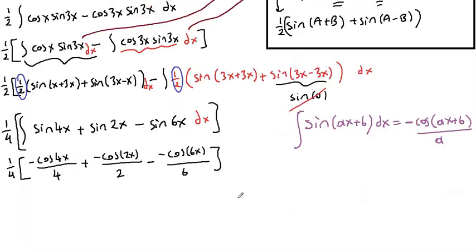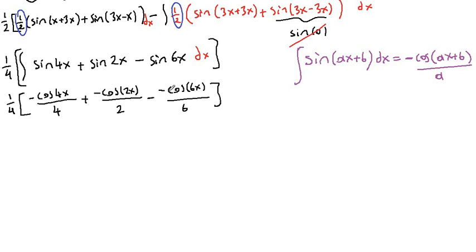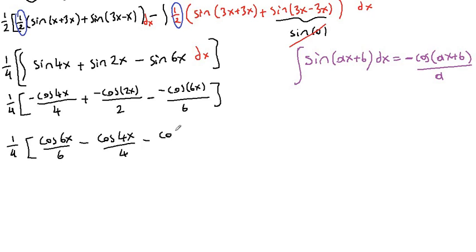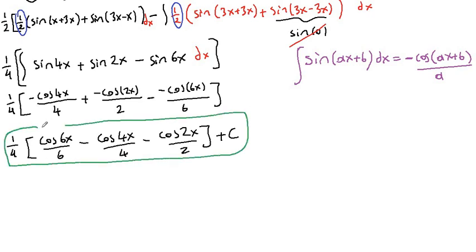Now we can simplify. Negative times negative is positive, and all other terms are negative, so we write: one fourth times cosine 6x over 6 minus cosine 4x over 4 minus cosine 2x over 2, plus C. This is our final answer. You can leave it in this compact form, or if you wish, you can multiply each term by one fourth and leave it like that. Thank you for watching.